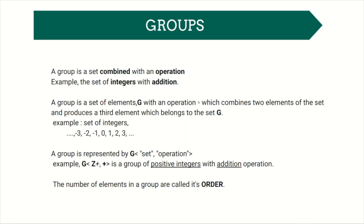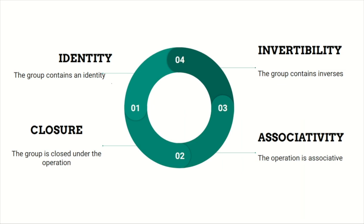One of the familiar examples of groups is the set of integers. A group is represented by capital G, set, comma, operation. For example, capital G, Z plus, comma, plus is a group of positive integers with addition operation. The number of elements in a group are called its order.